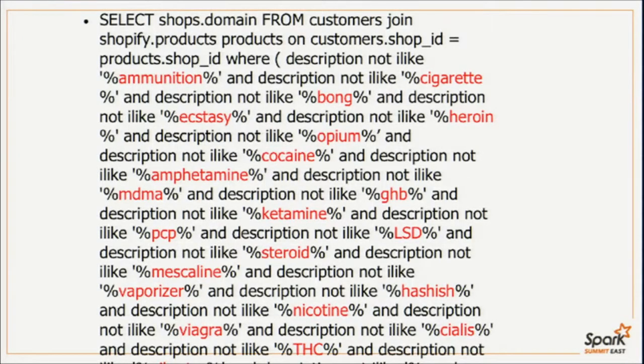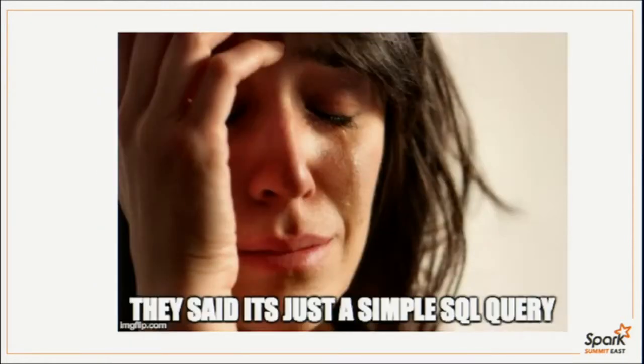The query they sent me — and believe me, there is more, there's just no room to show it — says give me shop domains from customers joining products across these massive tables where the description is NOT LIKE ammunition, NOT LIKE cigarettes, NOT LIKE this, and the list goes on. I tried running it and that's what the next week of my life looked like. I kept timing out. Sometimes I'd get up very early in the morning to run it when nobody else was using the database — it would start working but then kill all the nightly and hourly ETL jobs. The worst thing was our data engineering guys would be like, 'Who's running that drug query? Why are you looking for all those drugs?' Not a very good reputation to go by.